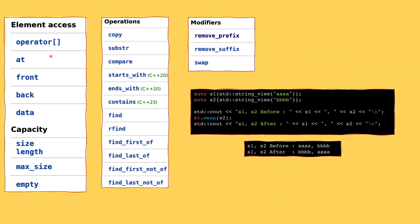Let's quickly look at some other methods that string view provides. You get familiar STL methods like brackets, at, front, and the rest. You get methods similar to the string class, like substr and compare. We already talked about remove_prefix and remove_suffix. There's also swap, which swaps two views with each other. So if S1 is a view to A's and S2 is a view to B's, when I swap S1 and S2, after that S1 would be a view to B's and S2 would be a view to A's.